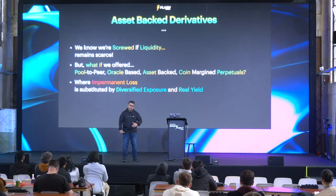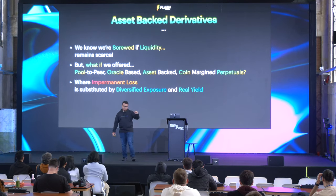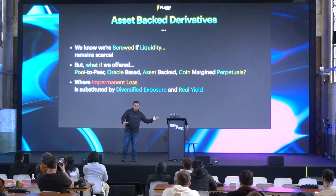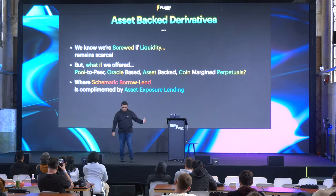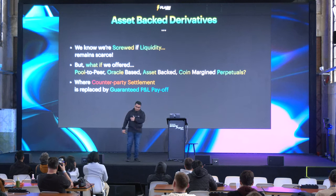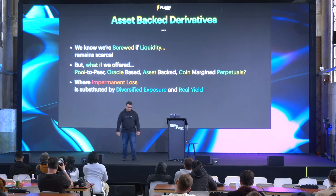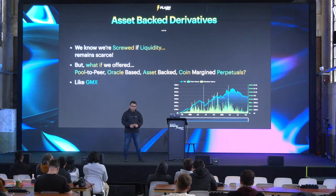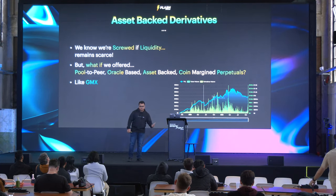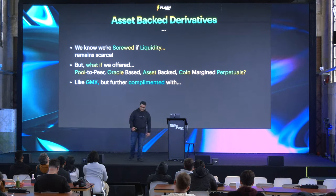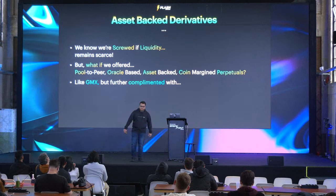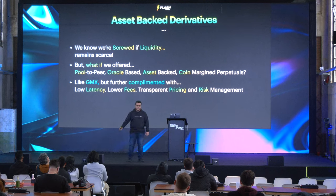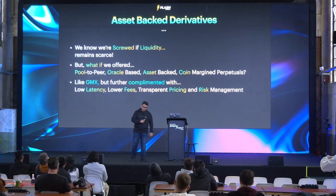We can also substitute impermanent loss with diversified exposure and real yield, using a multi-asset pool that diversifies exposure and earns real yield by lending exposure to assets and earning a fee. So: schematic borrow-lend complemented by asset exposure lending, counterparty settlement replaced by guaranteed P&L payoff, and impermanent loss substituted by diversified exposure and real yield — just like GMX. GMX was live on Arbitrum from day zero and we've seen them grow. But what if we can further complement it with things only possible on Solana — low latency, lower fees, transparent pricing, and risk management? One of the troubles on EVMs is high latency and the mempool.